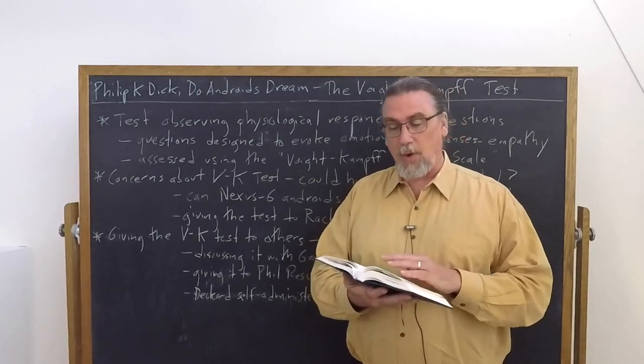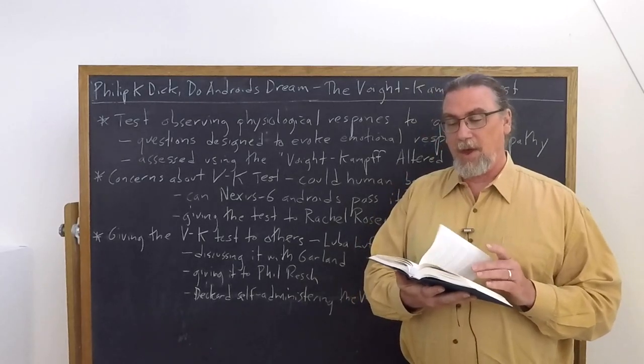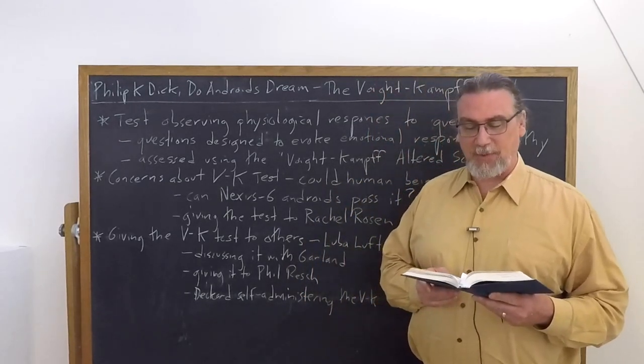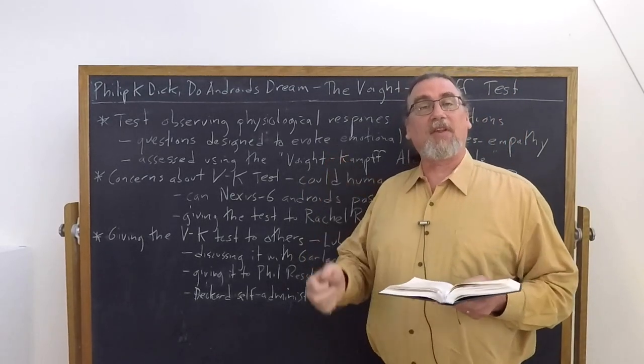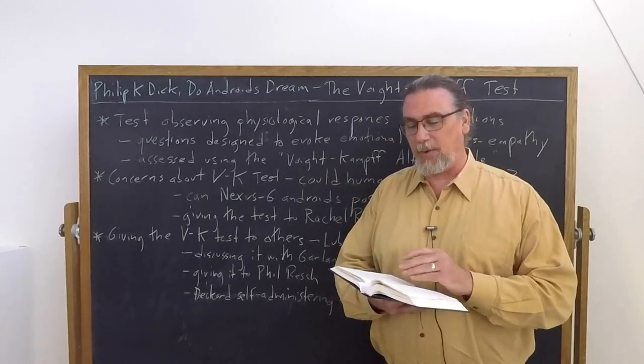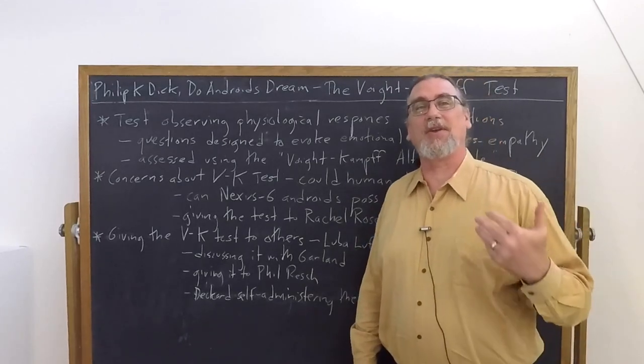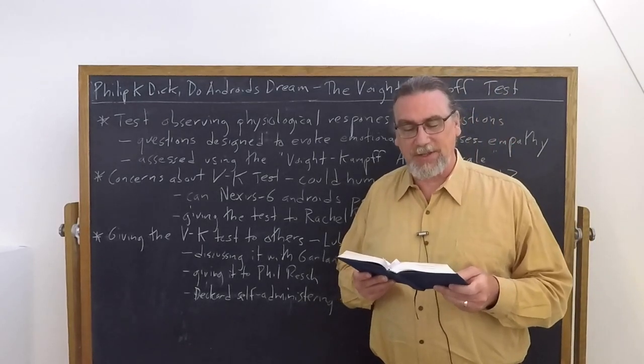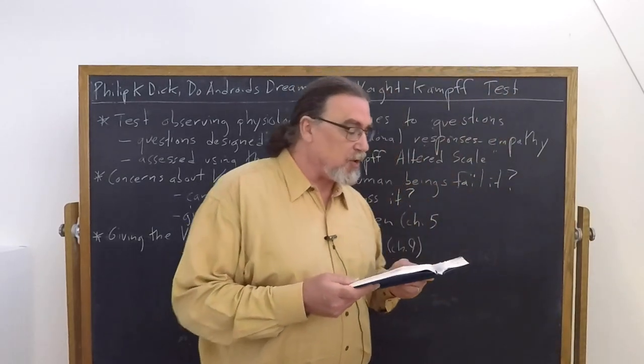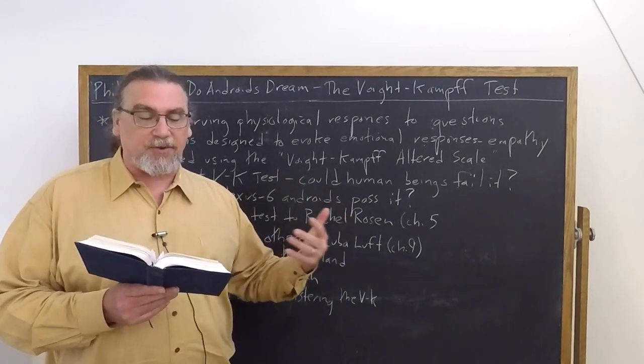So what do we find? He goes to the Rosen Corporation and he's going back and forth with Eldon and Rachel Rosen and Rachel's asking about the test. And then she says, give me the test. And Rick says, why? And then Eldon Rosen, the head of the corporation says, we selected her as your first subject. She may be an Android. We're hoping you can tell. So they give the test to Rachel and here we should look at the questions that are being asked. He says, I'm going to outline a number of social situations. You are to express your reaction to each as quickly as possible. You're going to be timed. And she says, of course, my verbal responses won't count. It's solely the eye muscle and capillary reaction you'll use as indices, but I'll answer. I want to go through with this. Go ahead, Mr. Deckard.